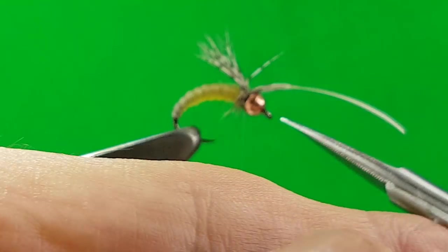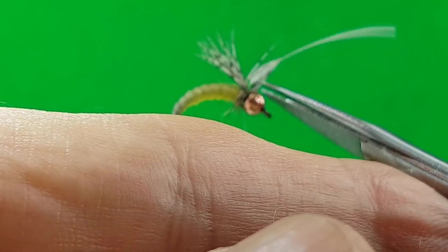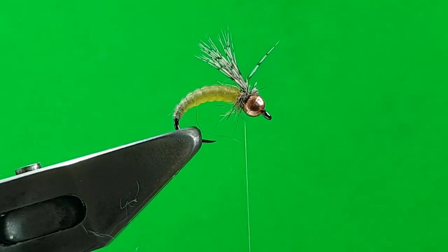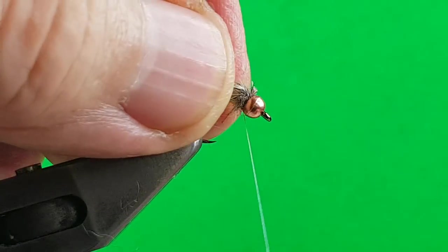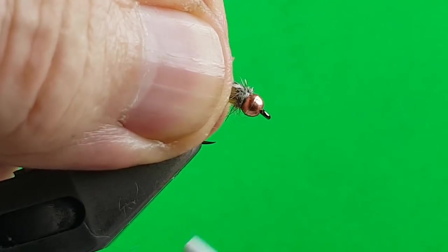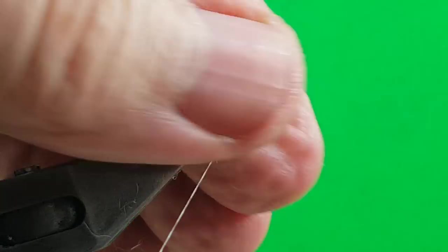And then cut off the excess. Fold it all back. As I say, it's just personal preference here what you do. Nanosilk, you can really bind that down.